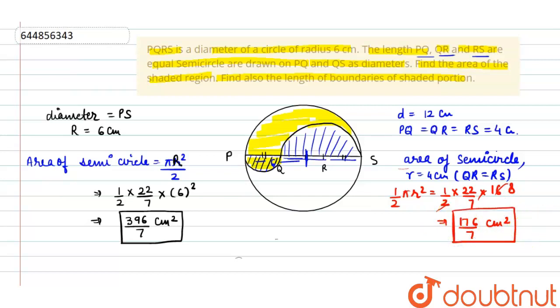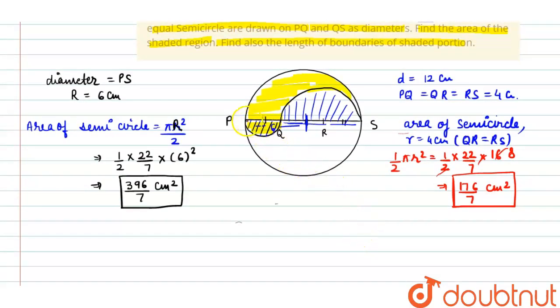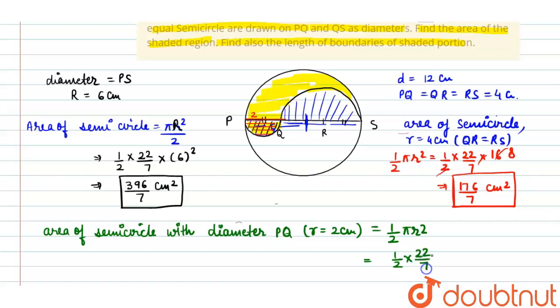Next is, we have to find the area of this small part. Total it is 4, it means its radius is only 2 centimeter. Third part area, area of semi-circle with diameter PQ. Radius is 2 centimeter. Again, applying same formula, half πR². We will put the value 1/2 × 22/7 × 2 × 2. 2 and 2 will be cancelled out. 44/7 cm².